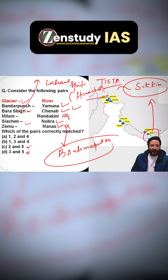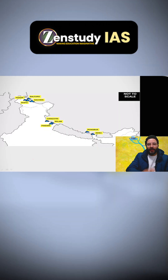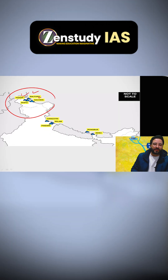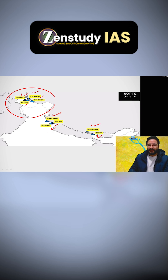So I will go with options one, two, and four — that is option first. Kindly remember these points; they are of utmost importance. These are the glaciers we are seeing: Hispar, Baltoro, Siachen, Biafo — we consider these ours. We also have Gangotri, Milam, Pindari, Zemu glacier, and the Roopkund area as well.